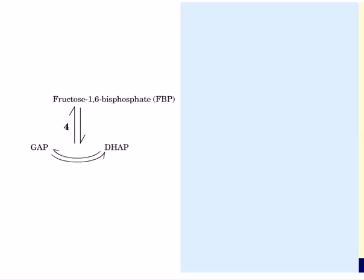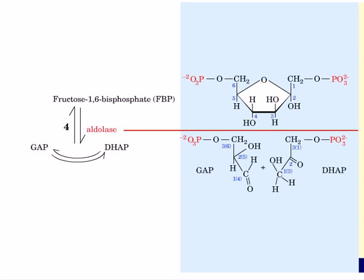The fourth reaction is the conversion of fructose 1,6-bisphosphate to glyceraldehyde 3-phosphate (GAP) and also the production of dihydroxyacetone phosphate (DHAP). The reaction is catalyzed by aldolase and it generates two three-carbon phosphorylated carbohydrates. The linear form of fructose 1,6-bisphosphate is cleaved between the third and fourth carbon, generating GAP and DHAP.